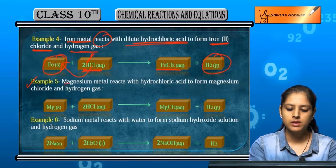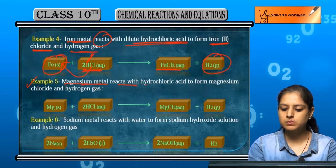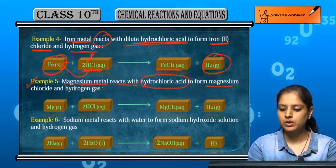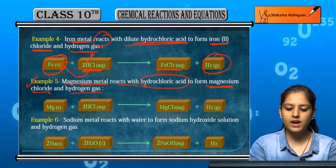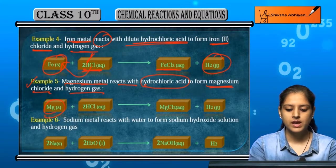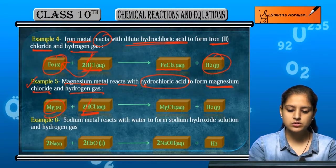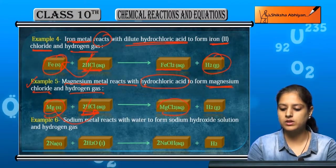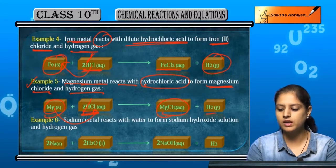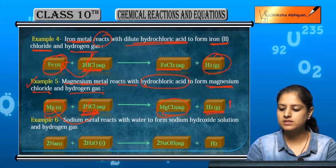Next example: magnesium metal reacts with hydrochloric acid to form magnesium chloride and hydrogen gas. Mg plus 2HCl forms MgCl2 plus H2. Hydrogen is replaced and forms hydrogen gas.